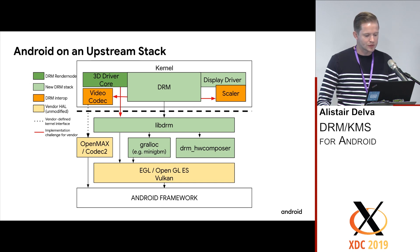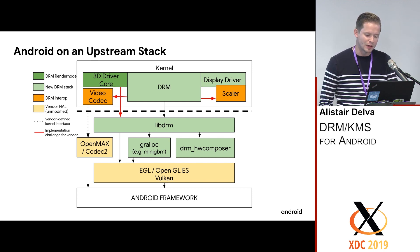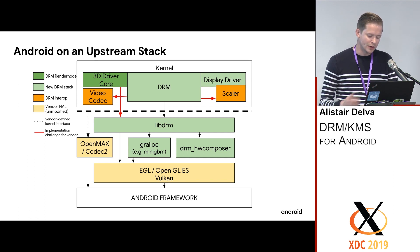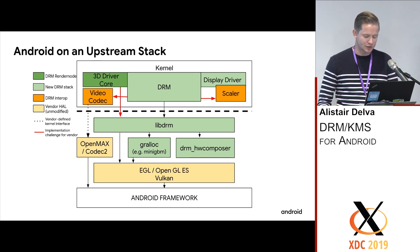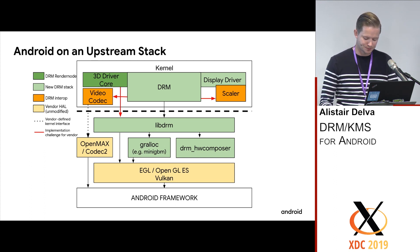3D drivers are usually implemented as a DRM render node. We can use libDRM, which provides a layer just above the kernel where we can start plugging in tests and other things. As you can see from the diagram, we're still using the same HALs that Android exposes on the old stack on the new stack — it's just that those are designed to work with the open source components.